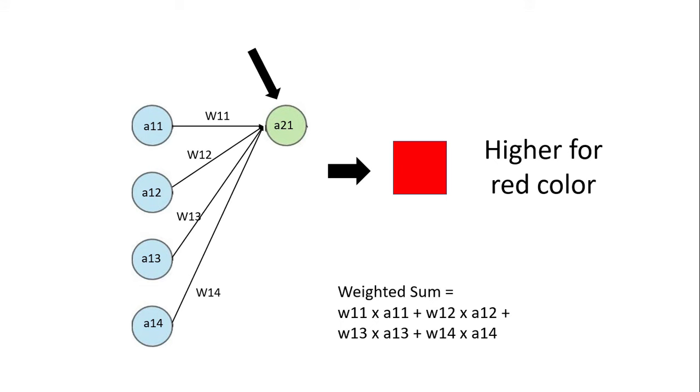Now, we also need to add another parameter called bias. This bias value determines how high our weighted sum should be. If the B value, the bias value, is negative, then our weighted sum will be less. But if this value is a high positive number, then our weighted sum will be high.